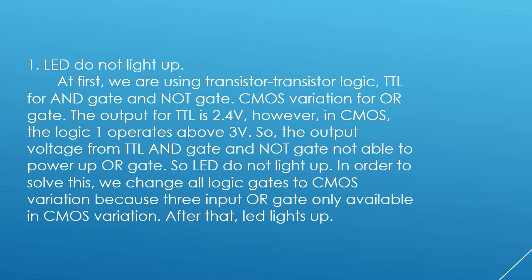The first problem encountered was that the LED did not light up. Initially, we were using transistor-transistor logic (TTL) for the AND gate and NOT gate, and a CMOS variation for the OR gate. The output for TTL is 2.4V; however, in CMOS variation, logic 1 operates above 3V. So the output voltage from the TTL AND gate and NOT gate were not able to power the OR gate, causing the LED not to light up. To solve this, we changed all logic circuits to CMOS variation, since the 3-input OR gate is only available in CMOS variation. After that, the LED lit up.